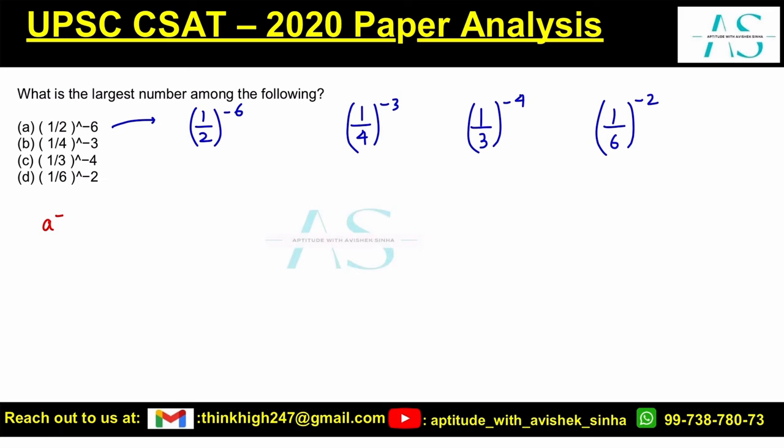If something is written like a to the power minus p, this can be written as one by a to the power p. Or if something is written as one by a to the power minus p, it is written as a by one to the power p. So this is clear if you are following this.